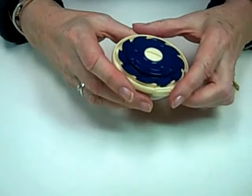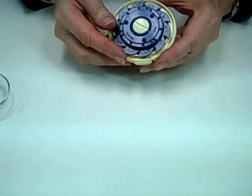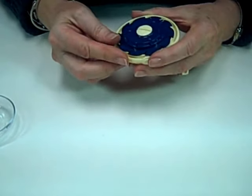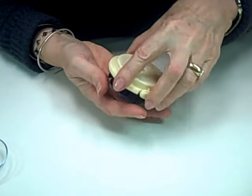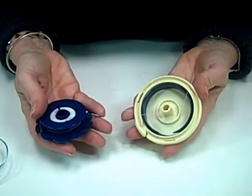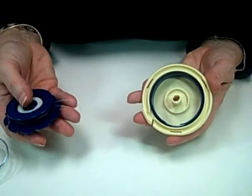If, for some reason, something gets really twisted up in there, and I've never had it happen personally, this is a little screw here where you can open that and turn this and this comes out and you can start all over again.